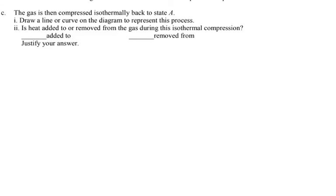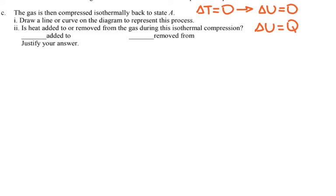Because it is an isothermal process, ΔT = 0, which means ΔU = 0. From the first law, ΔU = Q + W_on_gas, so 0 = Q + W_on_gas. Since we are compressing the gas, the work done on the gas is positive, which means Q must be negative — heat is removed from the system during this isothermal compression.